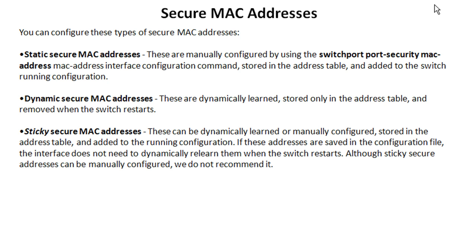Cisco provides you with two methods where you don't need to know the specific MAC address and tie that to the port. The first of these is dynamic secure MAC addresses, and that's exactly what it sounds like — it's going to learn the MAC address just like a normal CAM table and store that in the switch. So when the user plugs in and his MAC address is dynamically learned, only that device with that MAC address can access that port.